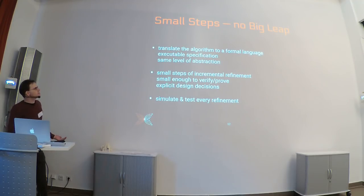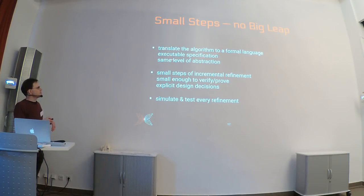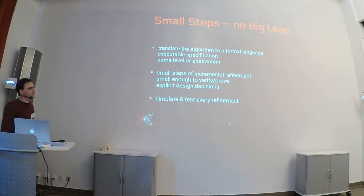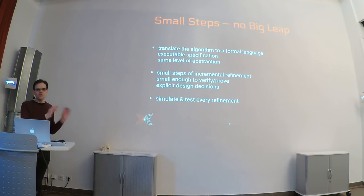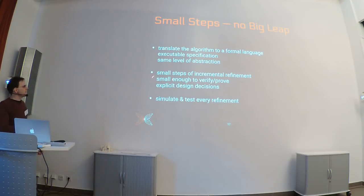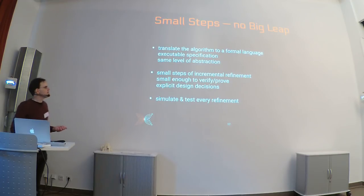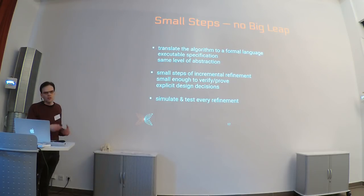The approach is to make this bridge not in one big leap but in many small steps. The first step is to take the paper and translate the algorithm into a very formal language — basically a programming language — producing an executable specification at the same high level of abstraction. It's a one-to-one translation: if you teach researchers the formalization language, they can confirm 'yes, this is what I meant.' Then you make many small refinement steps, each small enough to be verified correct either by proof or inspection, making design decisions explicit at each stage.